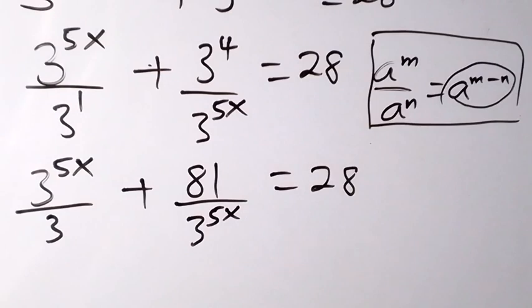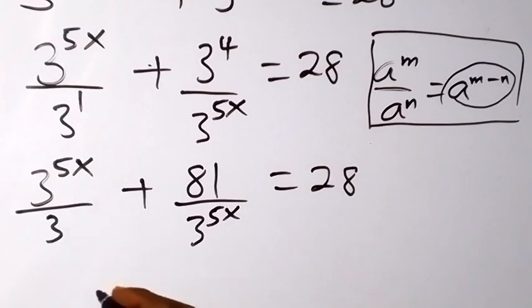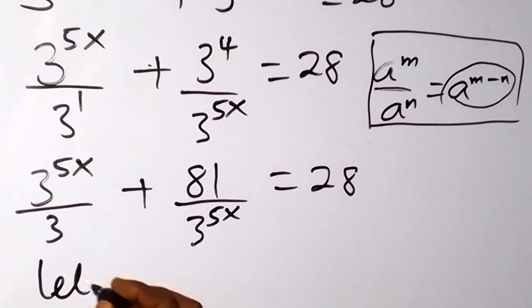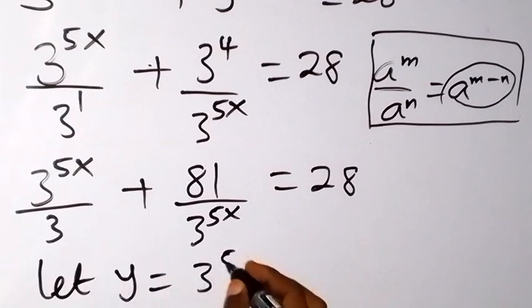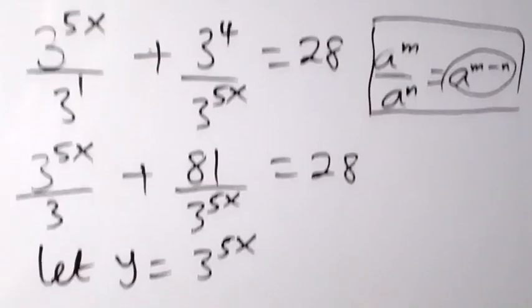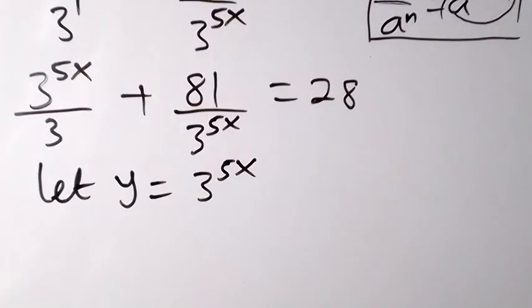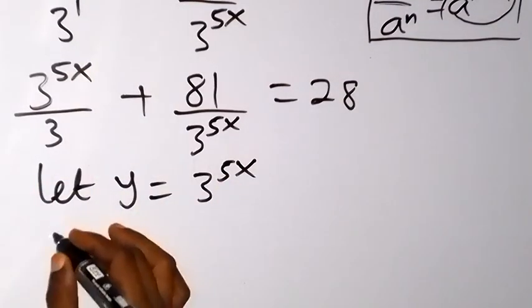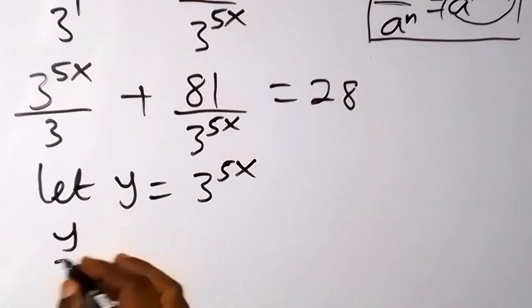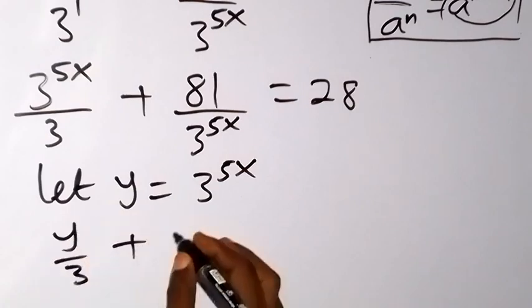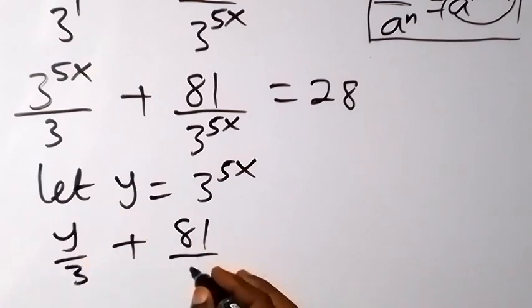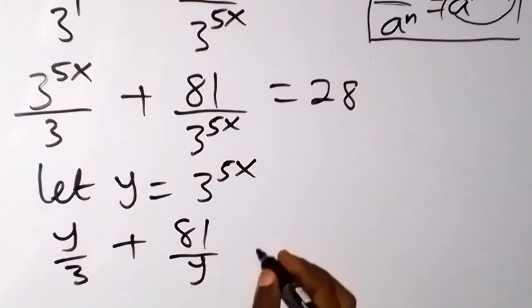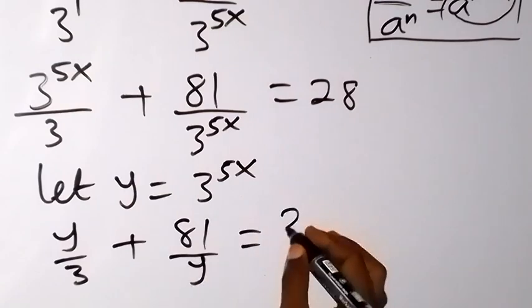From here, we have 3 raised to the power 5x repeated. So let's use a substitution — let y equal 3 raised to the power 5x. Therefore, we can rewrite this equation as y over 3 plus 81 over y equals 28.